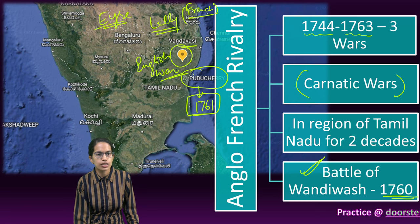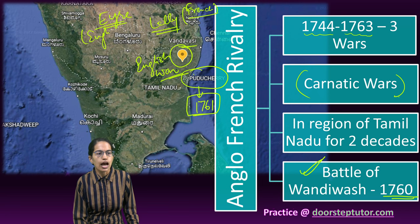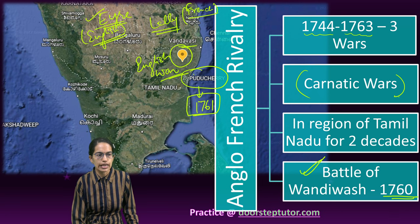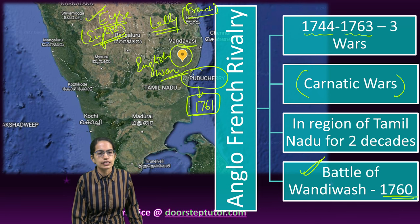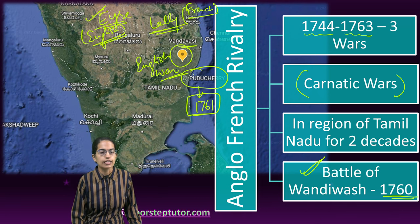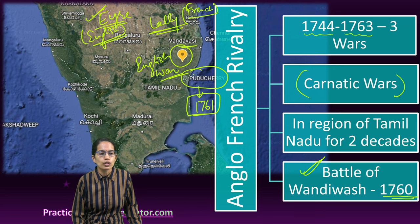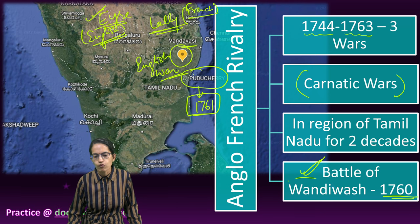The French were defeated by the English, and from the English side it was Eyre, Lord Eyre, and the other side was Lally — this was the Battle of Wandiwash.